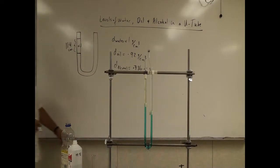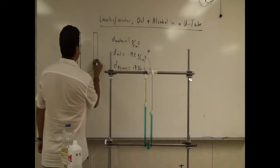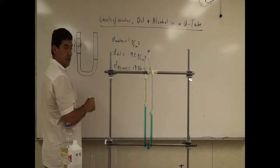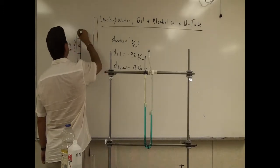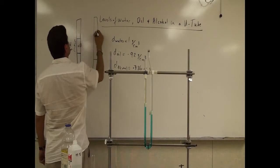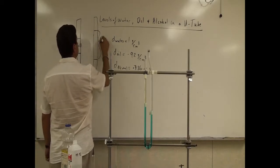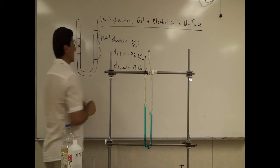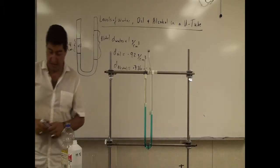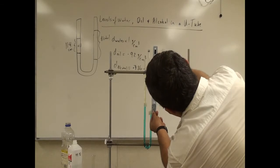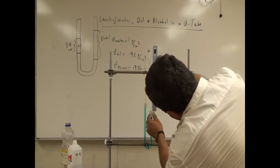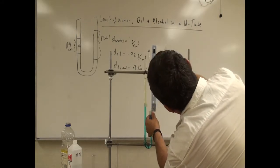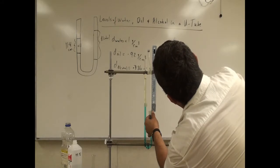On the right side, the water is a bit down, and the alcohol goes up even higher than the top of the oil — up to here. So let's measure: from here to here, that looks like it's about 17.3 centimeters.